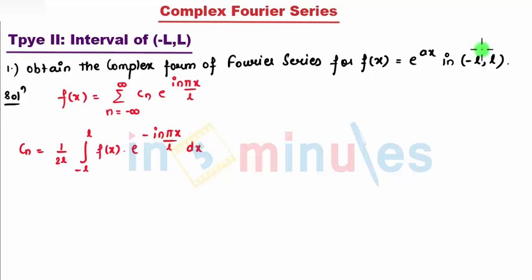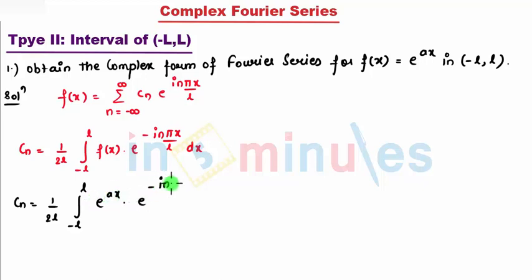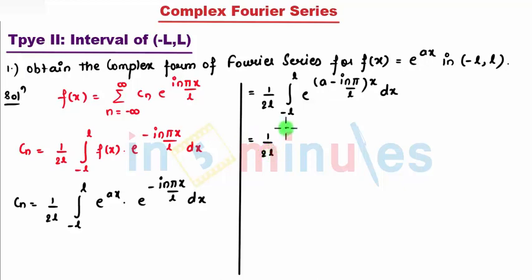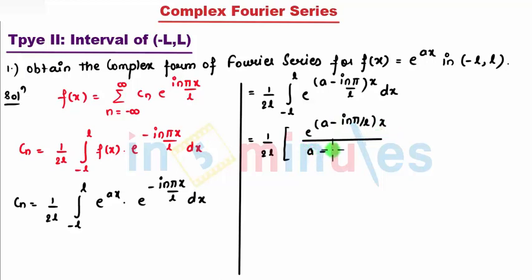We need to work with the L value because the interval is from minus L to L. So let's start finding c_n. I write c_n equal to 1 upon 2L, integral from minus L to L, where f(x) is e^(ax), times e^(minus i n π x / L) dx. I can combine the exponents to get 1 upon 2L times the integral of e^((a minus i n π / L) x) dx. After integrating, this gives 1 upon 2L times e^((a minus i n π / L) x) divided by (a minus i n π / L).